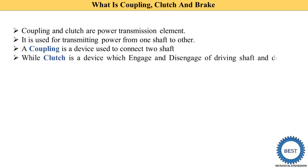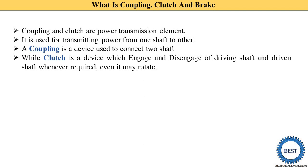The second component is the clutch. You already know that we use the clutch in two-wheelers, four-wheelers, or any vehicles. Clutch is a device which engages and disengages the driving shaft and driven shaft whenever required, even while it may be rotating. The driving shaft is rotated by some power source, and by using this driving shaft, the other shaft — called the driven shaft — is rotated.